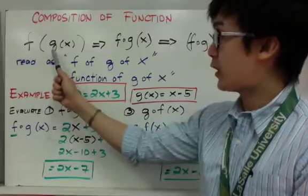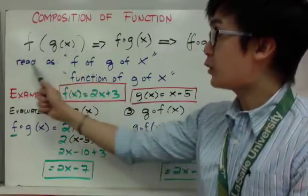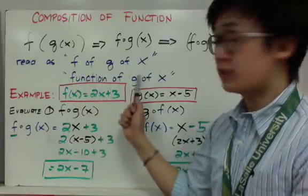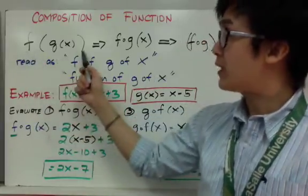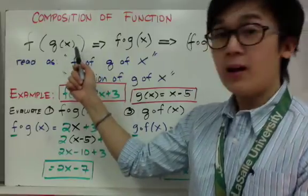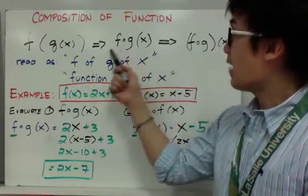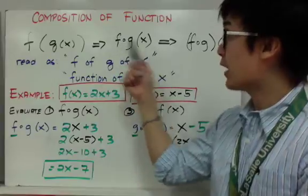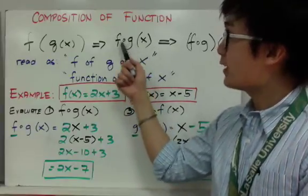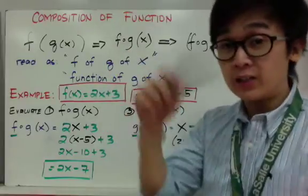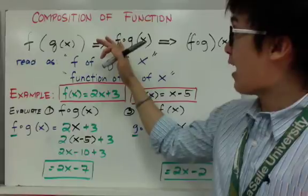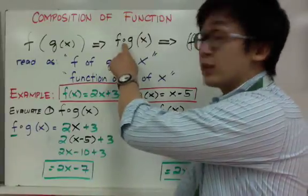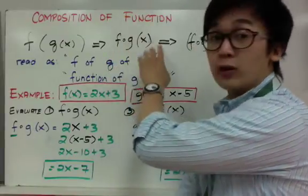We write it as f of g of x, or using the circle notation. When you see this circle notation, you read it as f of g of x — not 'fog x.' That little circle is not multiplication. Take note: when you see a circle, it means composition of functions. When you see a dot, it means f times g of x. So the circle and the dot are different operations.